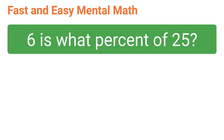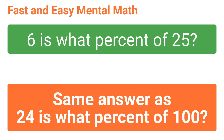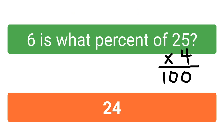6 is what percent of 25? Same answer as 24 is what percent of 100, which of course is 24. You can turn 25 into 100 by multiplying it by 4. All you have to do is make the 6 four times greater. 6 times 4 is 24.